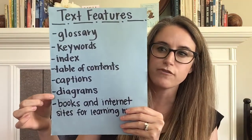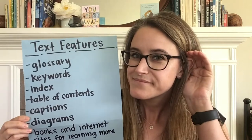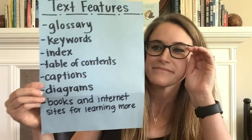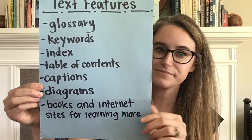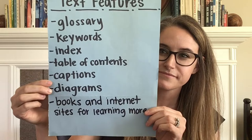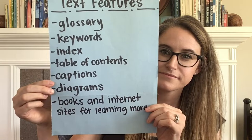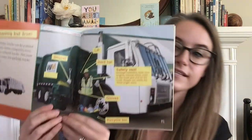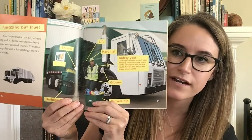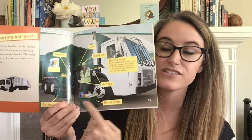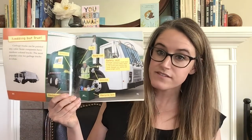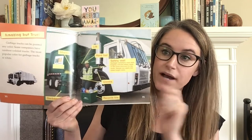Next on our text features list is a diagram. What might you learn from a diagram? Remember the lesson we did before today we really focused on the diagram in this book — we looked at it and said, okay, what can we learn from this diagram? Diagrams have labels that tell more about things, so a diagram can tell you about different parts of something or give you more information about a topic.